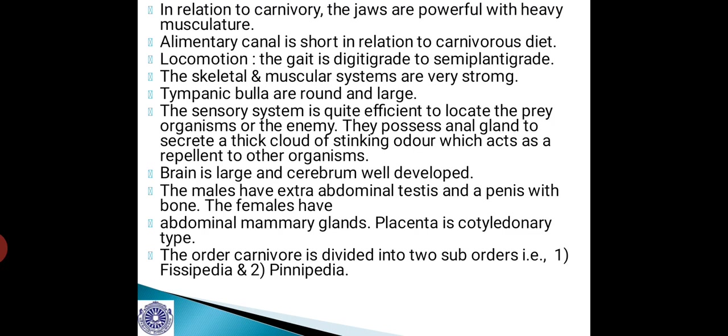In relation to carnivory, the jaws are powerful with heavy musculature, which is required for tearing the flesh of prey. The alimentary canal is short in relation to carnivorous diet. Locomotion is a very special type wherein the gait is digitigrade or semi-plantigrade. The skeletal and muscular systems are very strong, and the tympanic bulla are round and large.